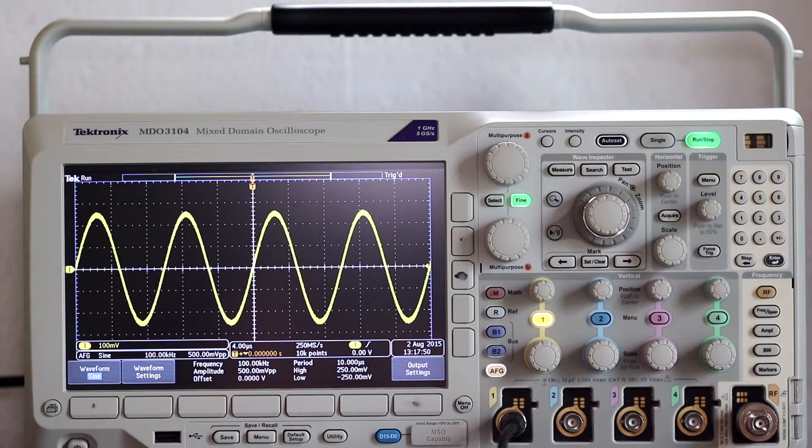Now we're ready to look at two triggering modes that are more advanced than those we discussed in the first part of the series, in video 21. First, press MENU in the triggering section, just to the left of the keypad.